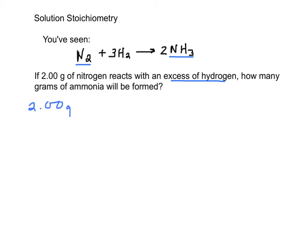2 grams of N2, right? We're going to change grams to moles. Then we're going to change moles of nitrogen to moles of ammonia. And then we're going to change moles of ammonia to grams of ammonia.